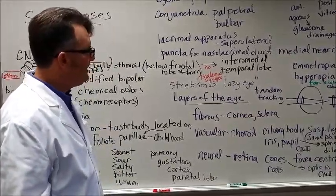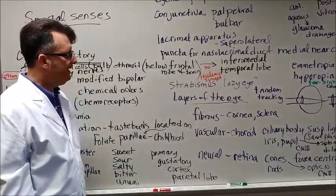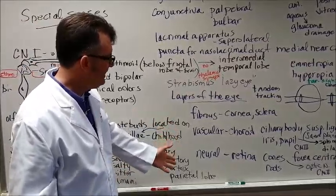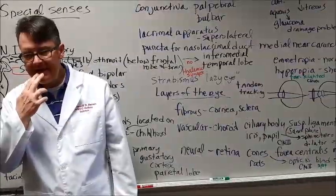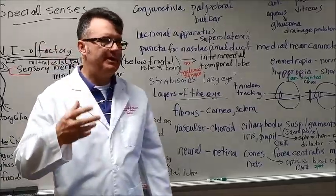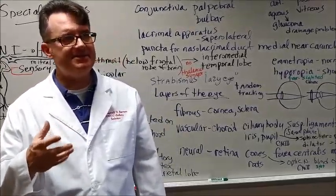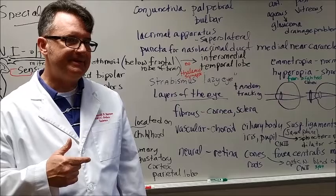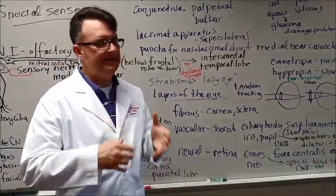Strabismus is called lazy eye. There is a problem with tandem tracking. The muscles in the eye don't help the eye track properly. There are several layers of the eye that we're going to talk about. There's a fibrous layer, a vascular layer, and a neural layer.